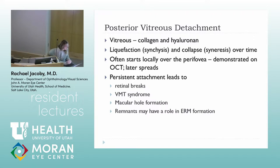The vitreous, made of collagen and hyaluron, over time starts to liquefy and collapse, typically starting parafoveally and then spreading to involve the fovea, optic nerve, and peripheral retina. Persistent abnormal vitreous attachment can lead to retinal breaks, vitreo-macular traction, macular hole formation, and remnants of vitreous are also implicated in epiretinal membrane formation.